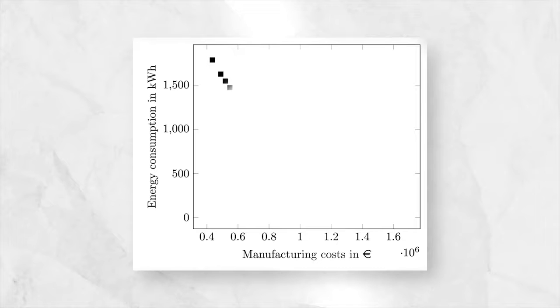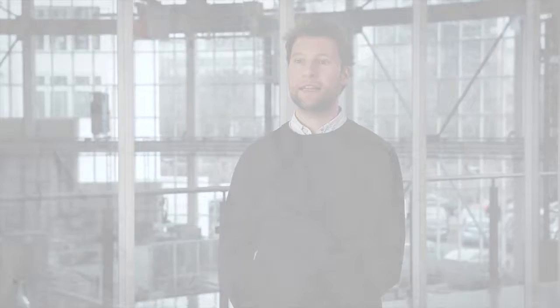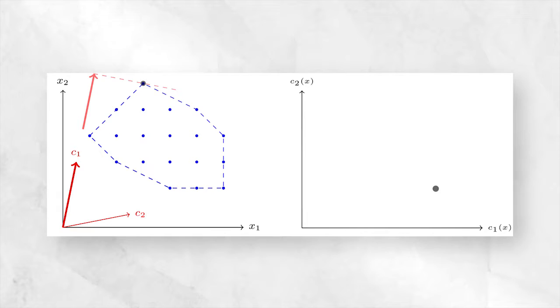These so-called non-dominated outcomes we want to be able to compute. The first step in our solution approach is to consider certain combinations of the original given objectives, and depending on the problem structure this might already be sufficient to find all non-dominated outcomes of the problem.